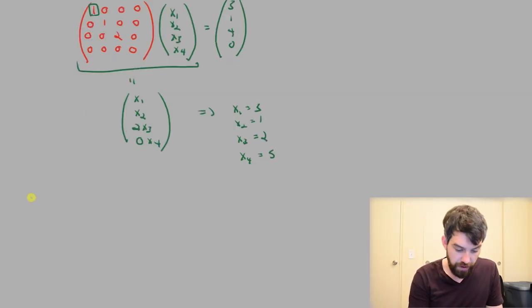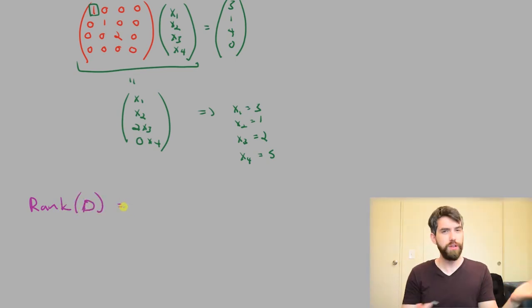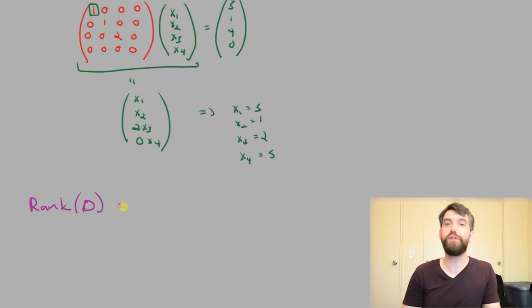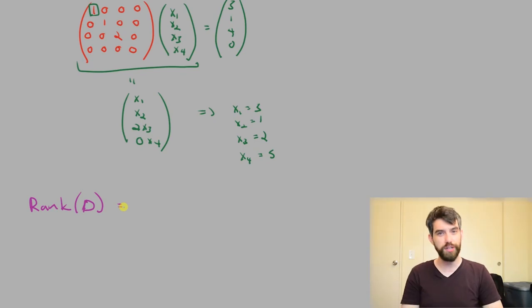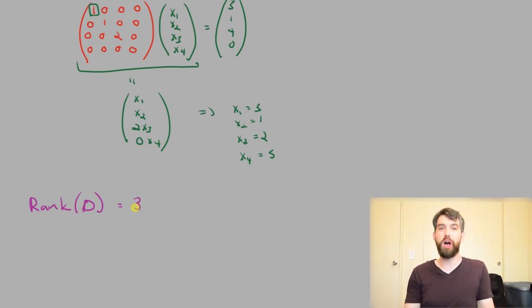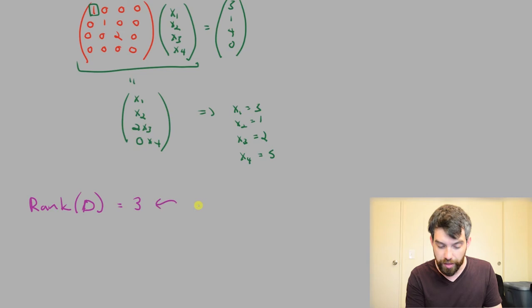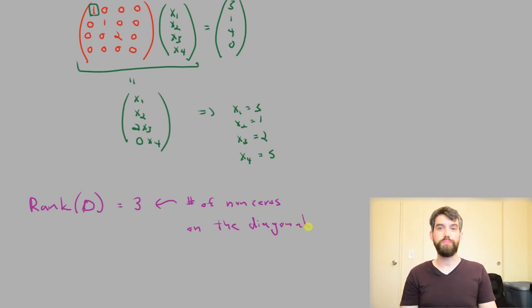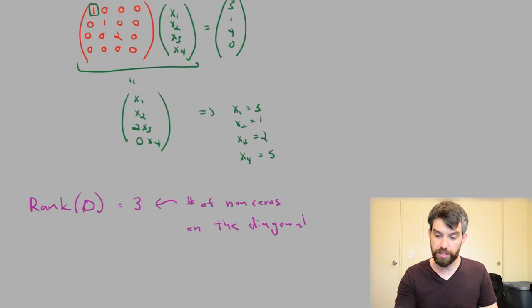Suppose I want to figure out the rank of this matrix D. The rank is defined to be the number of columns with leading ones. In this case we've got one free column of all zeros, and three that have something non-zero — I could divide the 2 and make it a 1 if I wanted to. So three leading ones, rank equals 3. I don't have to do any computation; I just look at the number of non-zeros on the diagonal. Doing anything with rank is completely trivial.